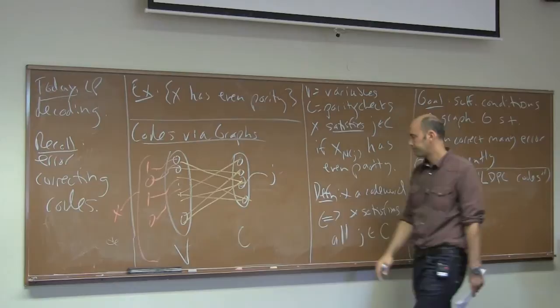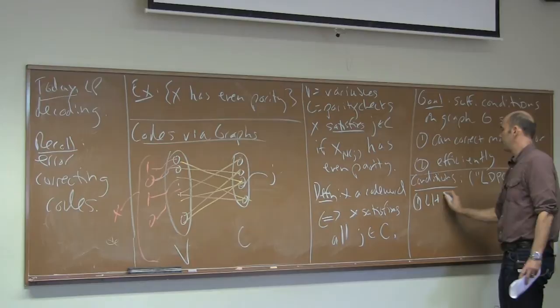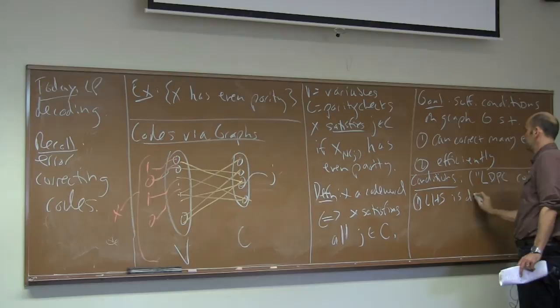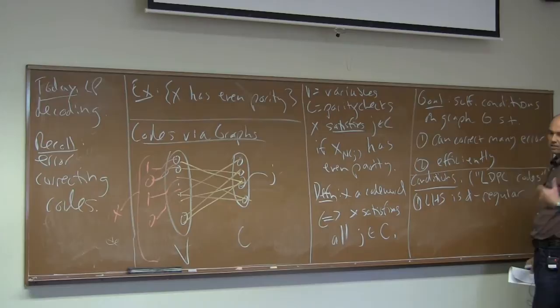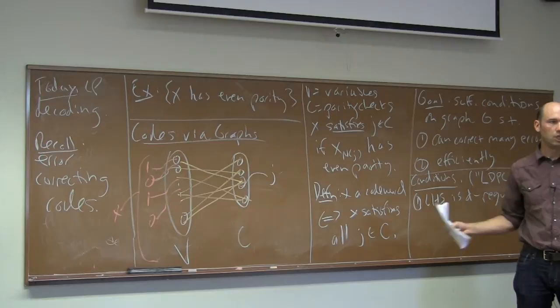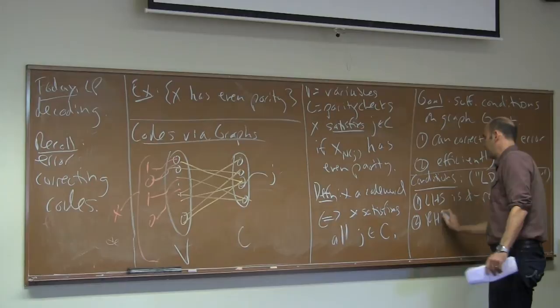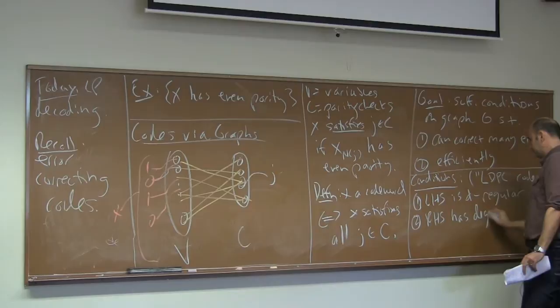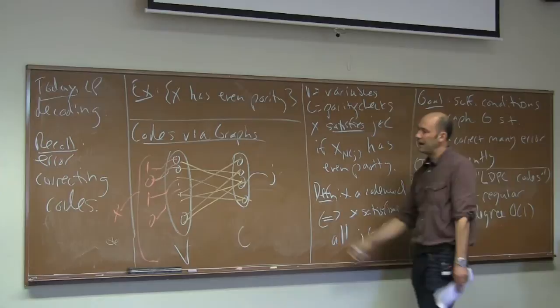The version we're going to look at assumes the left-hand side is D-regular, meaning every variable participates in exactly D parity check constraints — think of D as 10, certainly O(1). Similarly, the right-hand side has constant degree, maybe around 20. Think of the right-hand side as being about half the size of the left-hand side with double the degree.